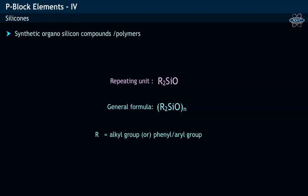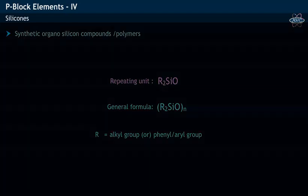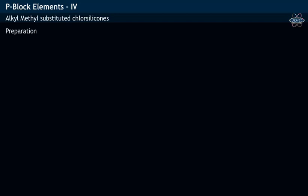In the formula, R refers to an alkyl or aryl group. Preparation of methyl alkyl substituted chlorosilanes.